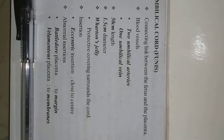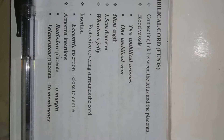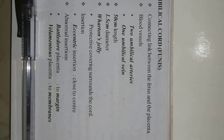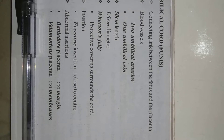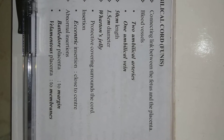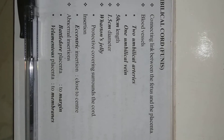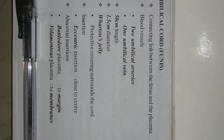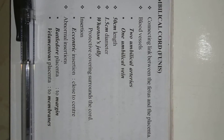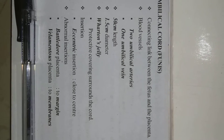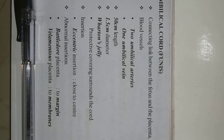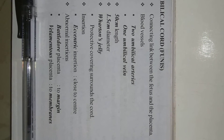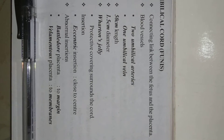The umbilical cord contains two methods of blood vessels. First one: two umbilical arteries and one umbilical vein. The length is 50 cm, and the diameter is 1.5 cm.